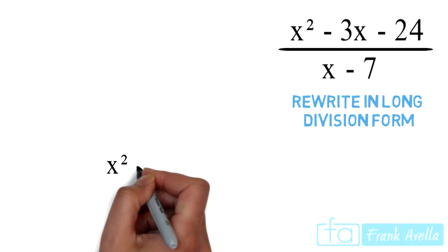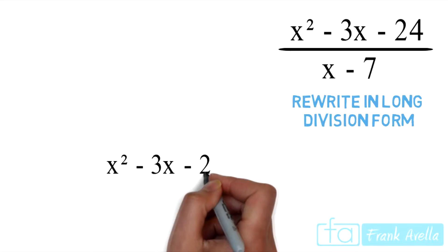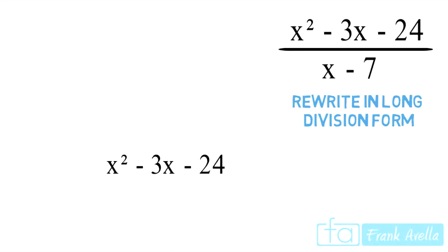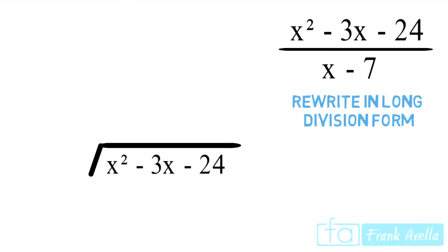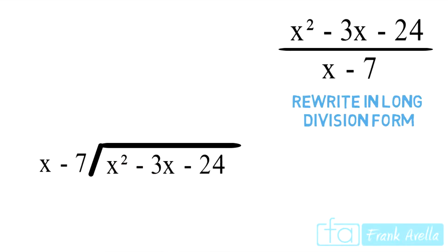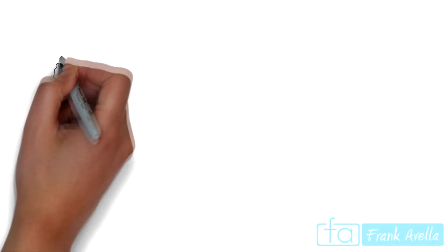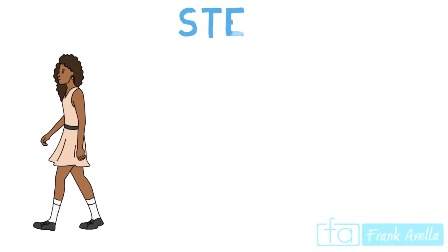Before we get started, we want to rewrite this problem in long division form. So we're going to have x squared minus 3x minus 24 inside the division sign, and on the outside we're going to have x minus 7. Now let's talk about how we're going to solve this problem.